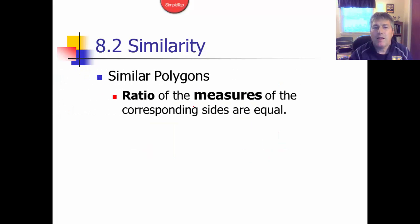In similar polygons, the ratio of the measures of the corresponding sides are equal. Here we have two triangles. One triangle has sides of 4, 5, and 6. The other triangle has sides of 8, 10, and 12.